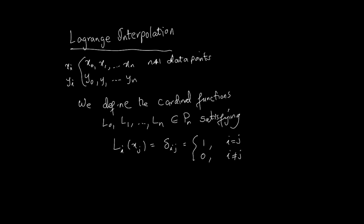The cardinal functions satisfy the property that li(xj) is equal to the Kronecker delta. The Kronecker delta is defined as: when i and j are equal, it takes the value 1; when i is not equal to j, it's 0. It has no other value. That's the fundamental property of these cardinal functions — they always take on just these two values.